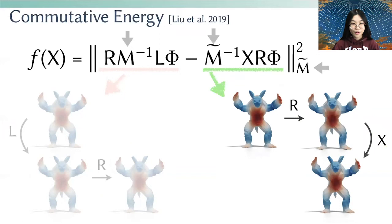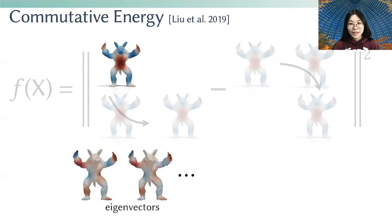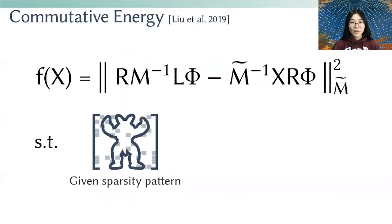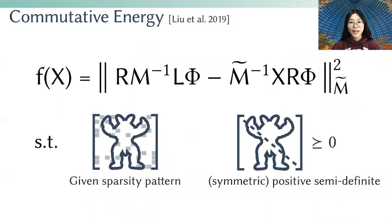Because the operators we consider here are usually defined on irregular domains, such as a triangle mesh, we also need to weight the formulation by their mass matrices. When phi are the eigenfunctions, we can prove that minimizing the commutativity energy also preserves the eigenvalues. Because discrete operators like the Laplacian also need to be symmetric positive semi-definite, we add those two constraints as well.